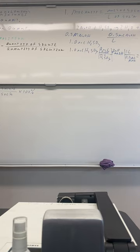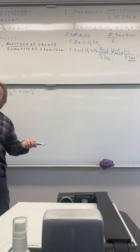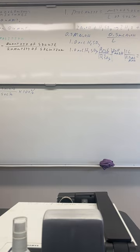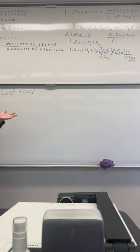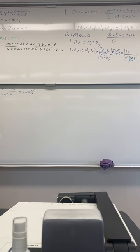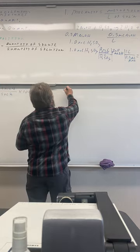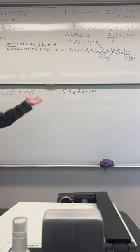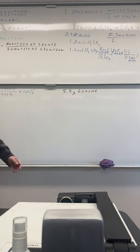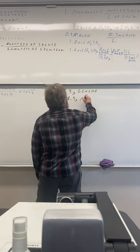Let's say we have a glucose concentration. We were talking about osmosis and how it affects blood cells. When someone is malnourished, an IV drip is used containing glucose. What is the percent mass concentration of a solution that has 5.5 grams of glucose? I'm not writing any chemical formula because it doesn't matter — we just want the mass for percent by mass.